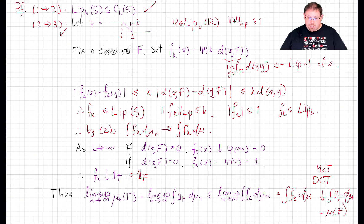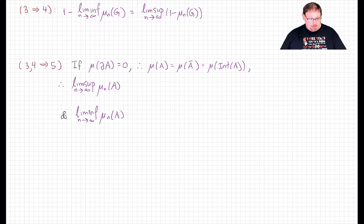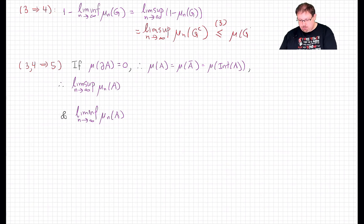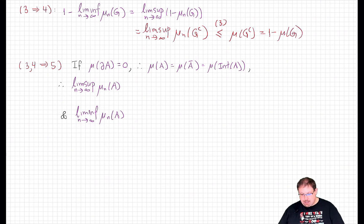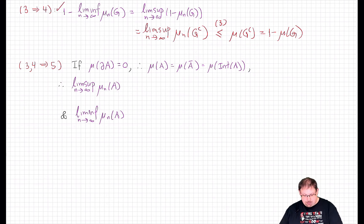Now let's see that conditions 3 and 4 are equivalent. Condition 4 is similar to condition 3, except we're talking about a liminf and open sets instead of a limsup and closed sets. If G is an open set, take 1 minus the limsup of mu_n(G) — that's the limsup of 1 - mu_n(G) = mu_n(G^c). Since G^c is closed, by condition 3, this limsup is ≤ mu(G^c) = 1 - mu(G). Rearranging gives the right inequality, establishing condition 4. The converse — going back from 4 to 3 — is almost word-for-word identical, so these two are equivalent.